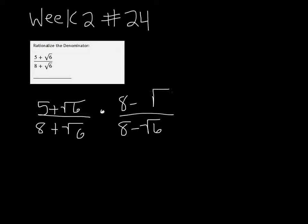And you have to do it to the top and the bottom, otherwise you're changing the problem. Because remember that anything over itself is just 1, so it's okay for us to multiply by 1.